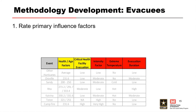The factors we score are: health and age factor, critical health facility evacuation, intensity factor, extreme temperature, and evacuation duration. For cardio deaths, we use CDC data which provides cardiovascular disease rates per 100,000 at the county level, giving fairly good estimates. That's how we're handling the health and age factor.